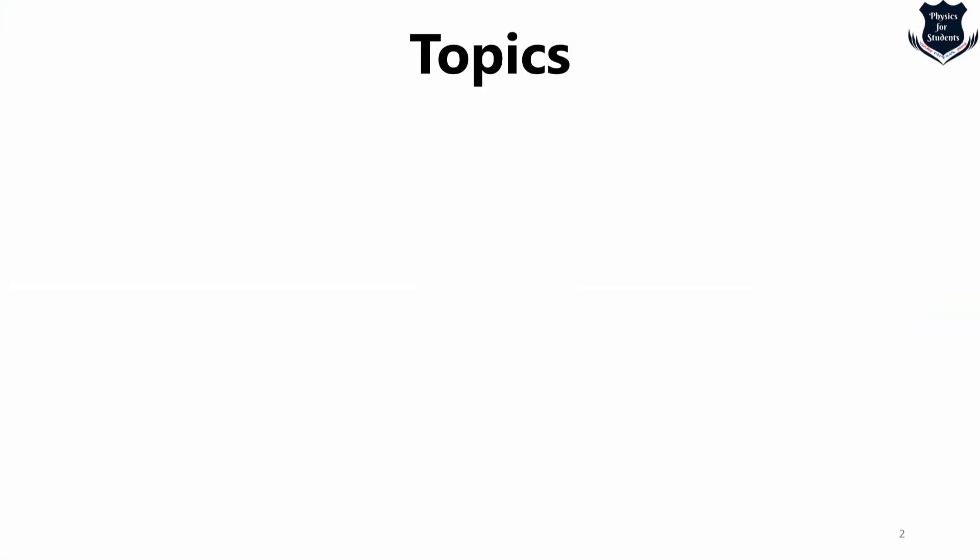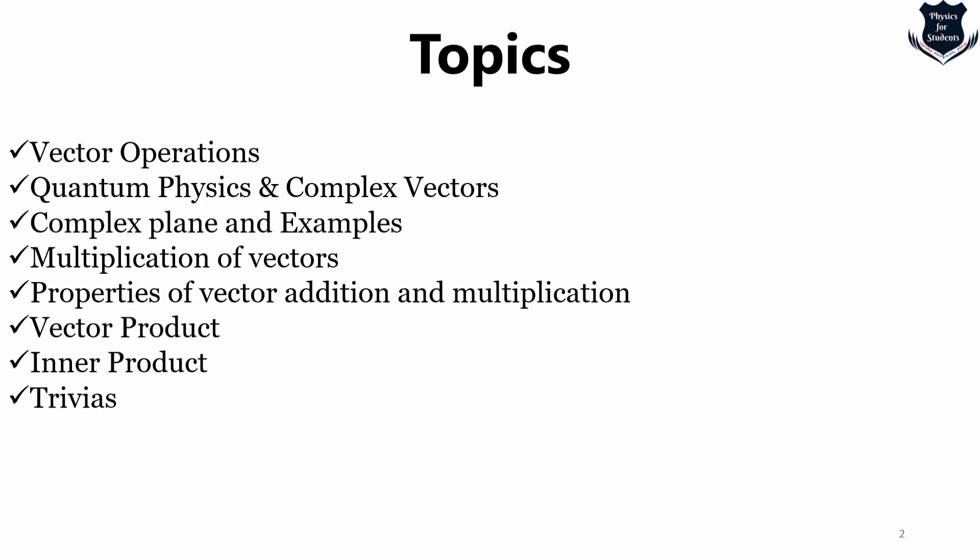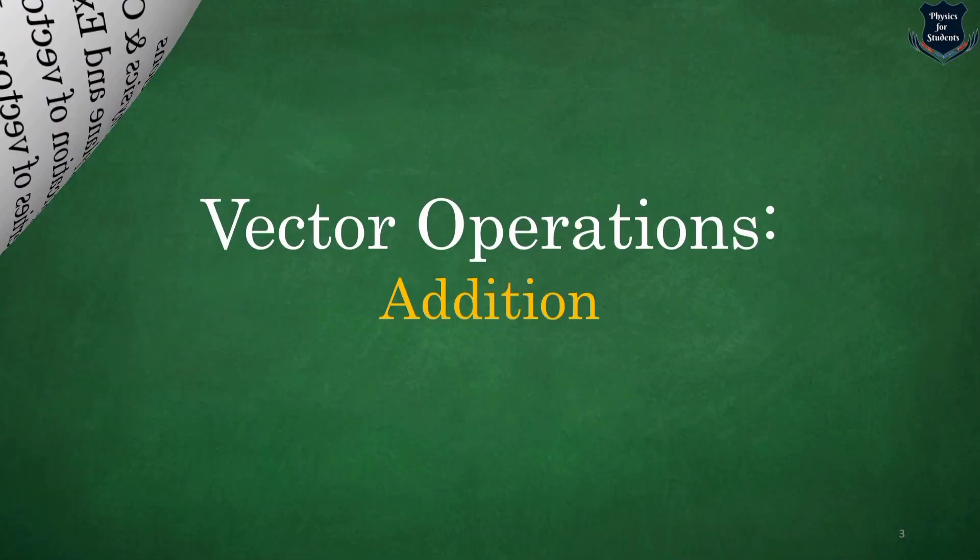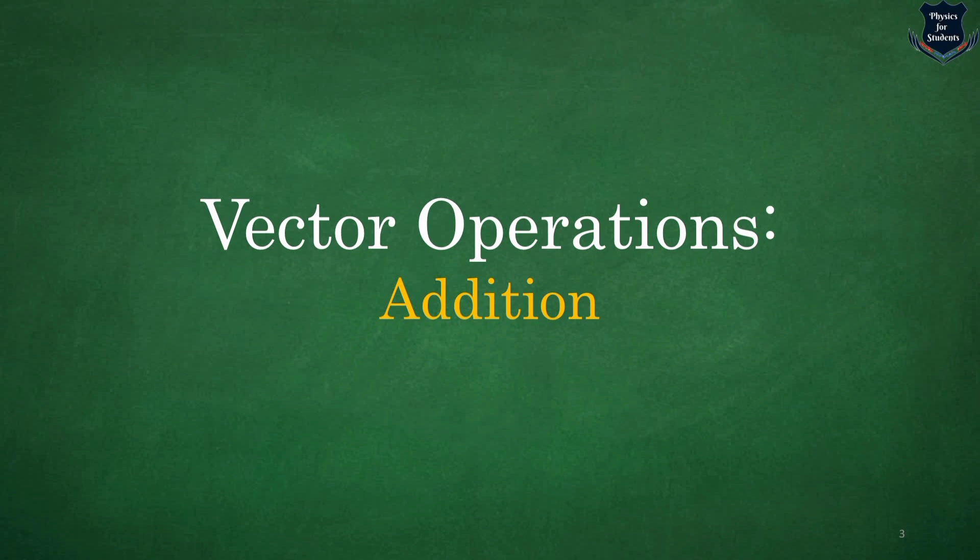Let us look at the topics we are covering: vector operations, what is quantum physics and how it plays a role in complex vectors, what is the complex plane with illustrations and examples, multiplication of vectors, properties of vector addition and multiplication, what is a vector product and an inner product, and some fascinating trivia. Let us start with vector operations — that is, addition.